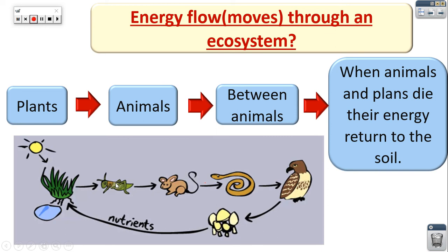Then the mice eat the insects, so the chemical energy goes from the insect's body to the mice's body. Then the snake eats the mice, so the chemical energy transfers from the mice to the snake. Then the hawk eats the snake, so the chemical energy transfers from the snake to the hawk. The chemical energy transfers from the plant to the insect, to the mice, to the snake, and finally reaches the hawk.